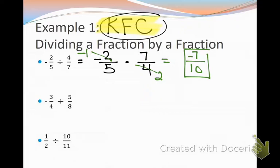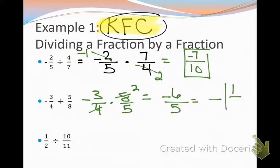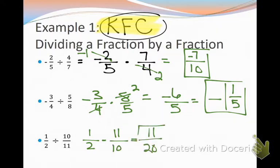I want you to try the next two now on your own. So you're going to do the reciprocal, multiply by the reciprocal of your second fraction. KFC. So we have negative 3 fourths times 8 fifths. We cross reduce and we get negative 6 fifths, which is negative 1 and 1 fifth. The third one is even more basic. I just flip the second one and then it's 11 over 20. There's no cross reducing or anything. I just multiply. Who got those right? Both of them. Very good. So that's example 1.